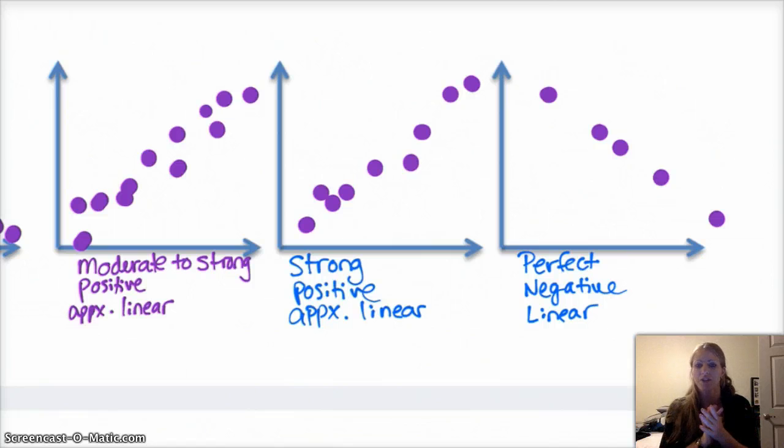Can you describe what these next two are? Yep, you got it. Strong, positive, approximately linear for the first. And the second one is, because all of those dots are on the same line, it's a perfect linear negative relationship.